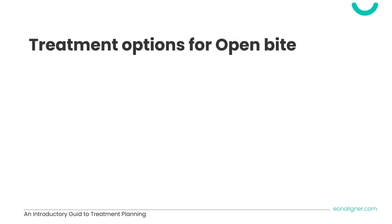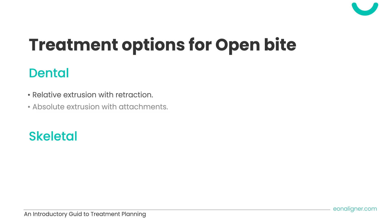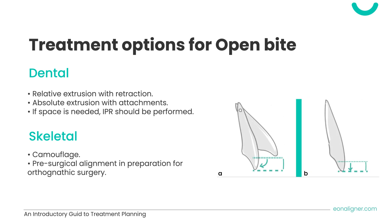Next, we'll discuss how to plan treating open bite cases with EON aligners. The treatment plan will differ depending on whether it is a dental or skeletal open bite. For dental open bites, treatment can be achieved by either relative extrusion — as shown in Figure A, which occurs when teeth are being retracted — or through absolute extrusion, as shown in Figure B. Always keep in mind that if space is needed, IPR should be performed. For skeletal open bite cases, we can camouflage the skeletal discrepancy, or if the patient chooses surgical treatment, perform pre-surgical alignment to prepare for orthognathic surgery.